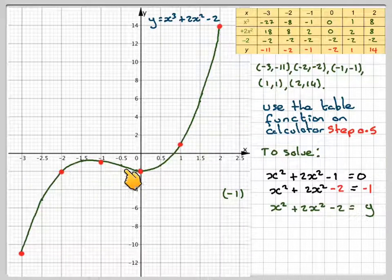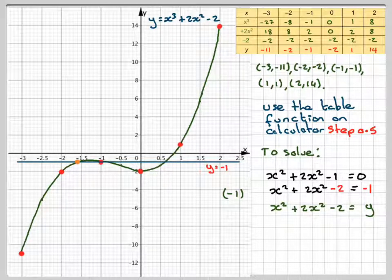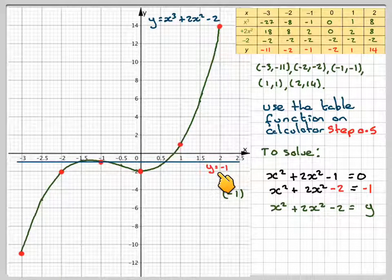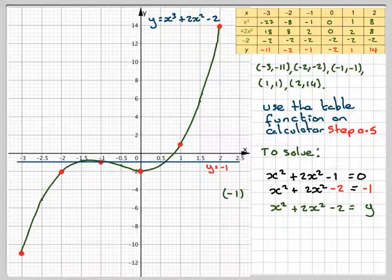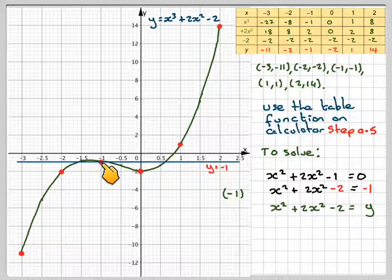The line y is equal to minus 1 will go through here. So I draw the line. And label it y is equal to minus 1. And then to solve the equation, I need to find where this intersects with the curve.